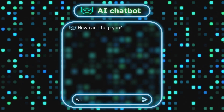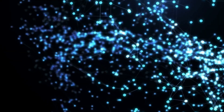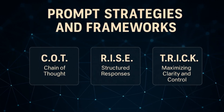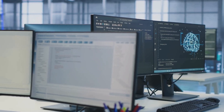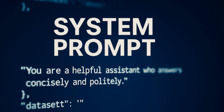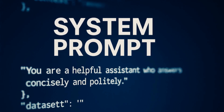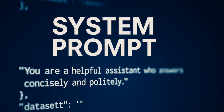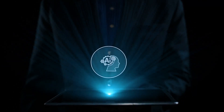This is especially true when you add context, set a role for the AI, or include formatting instructions. Frameworks like COT (chain of thought) for reasoning, RIC for structured responses, or TRICK for maximizing clarity and control are practical tools to get more consistent, useful results — especially in professional use cases. Many models also use a system prompt in the background; for example, it might tell the model 'you are a helpful assistant who answers concisely and politely.'